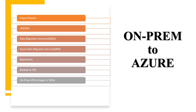Another method is transactional replication, which allows you to migrate data from on-premises to Azure. There is also Backup to URL — you create a storage account, take the backup of your on-premises database, keep the .bak file in the storage account, and restore it on Azure SQL or an Azure VM. Finally, you can migrate your on-premises VM using Hyper-V VHDs directly to an Azure VM. In the next video we will cover the first method: Import and Export. Thank you — please subscribe and press the bell icon for notifications.